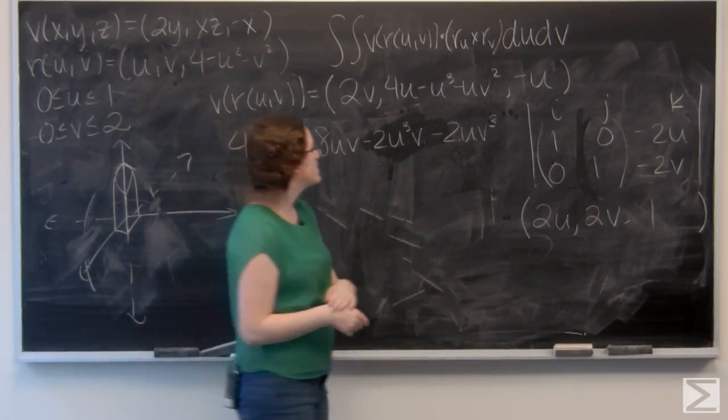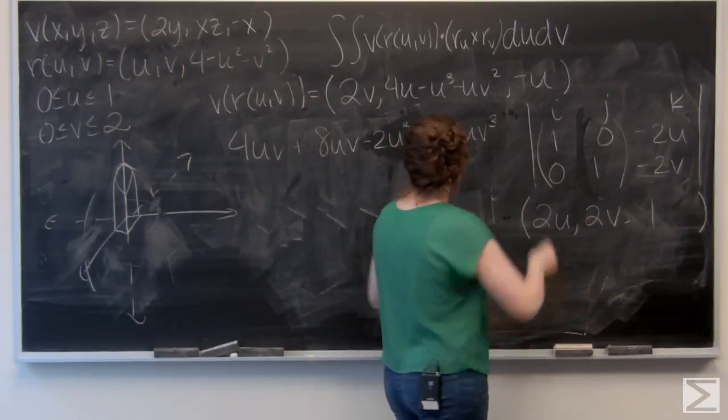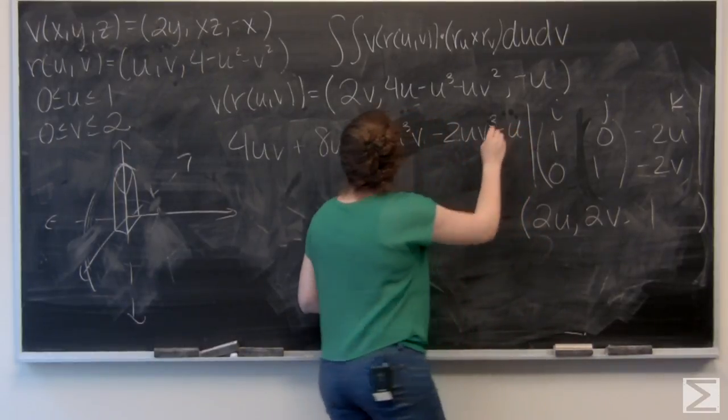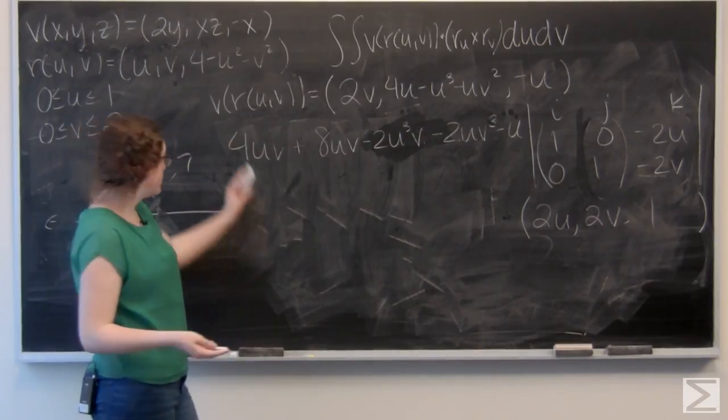And then, for the last component, I have negative u times 1, which is just minus u. And let's combine some terms. 4uv plus 8uv is going to be 12uv.